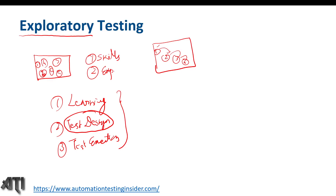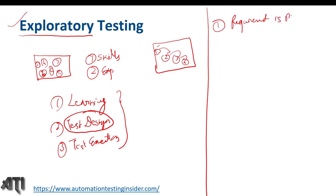The question is: why do we go for exploratory testing? Exploratory testing is mainly used in agile methodology. One reason is when we have missing requirements — when we are going to implement some functionality but the requirement is missing. Since we know about the application, we can explore it based on previous knowledge and experience. In agile methodology, because of frequent releases, we sometimes don't get requirements from the business team, so we go for exploratory testing.